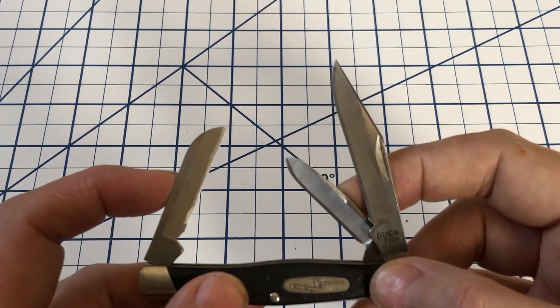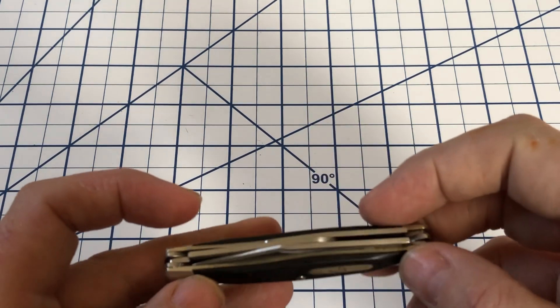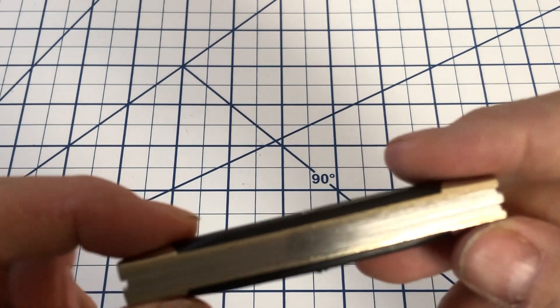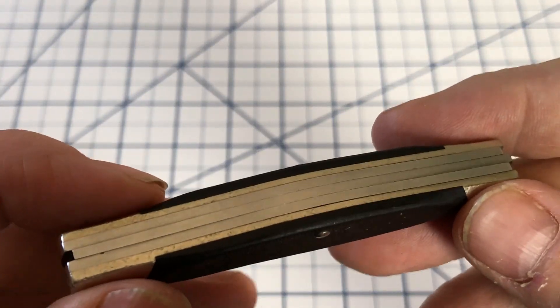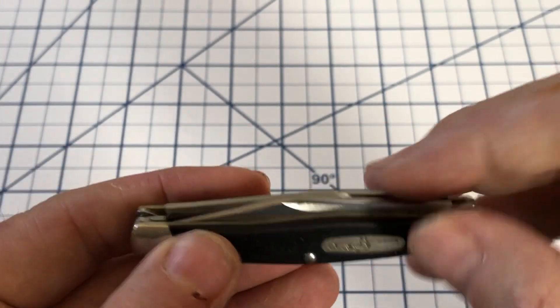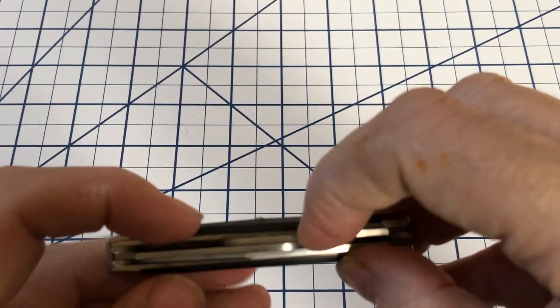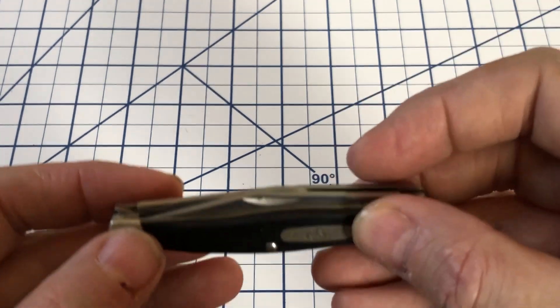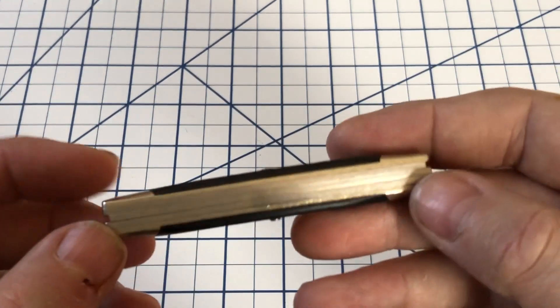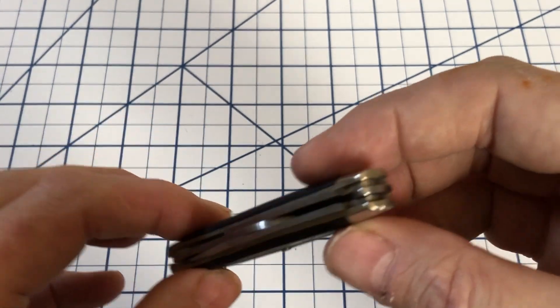Now when they did this, they also removed the liners and went from a two spring to a three spring system. In a lot of Stockman you have the clip point running on its own spring and then the spay and the sheep's foot running together on a second spring. Here each blade has its own dedicated spring.